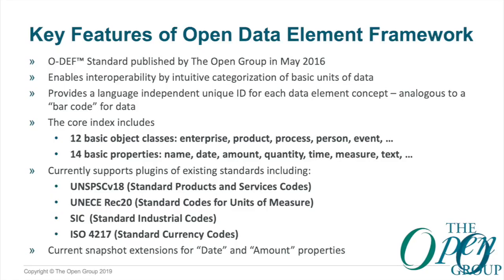Some of the features of ODEF: it was officially published by the Open Group in May 2016. It enables interoperability with an intuitive categorization of basic units of data. It has a language-independent unique ID for each concept. The core index has 12 basic object classes: enterprise, person, product, process, event — they're all defined and have unique IDs. Similarly, there are basic fundamental properties: name, date, amount, quantity, time, measure, text — 14 in total.